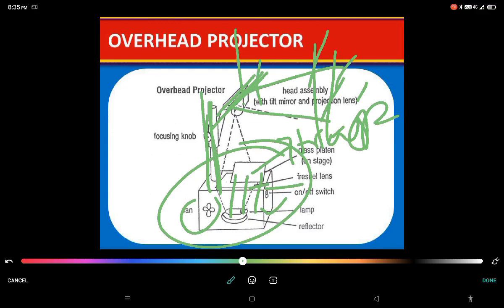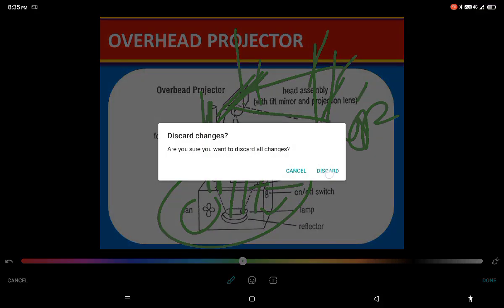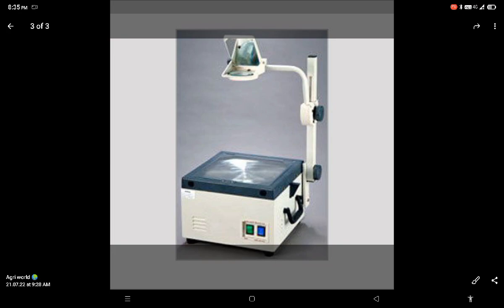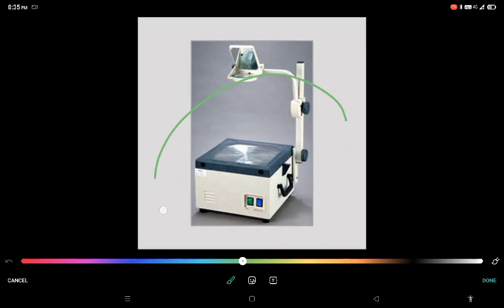So hope you understand the mechanism well. Now we will see the functions. This is real pic of the overhead projector. The here Fresnel lens is there and on which the transparencies will be should be placed.